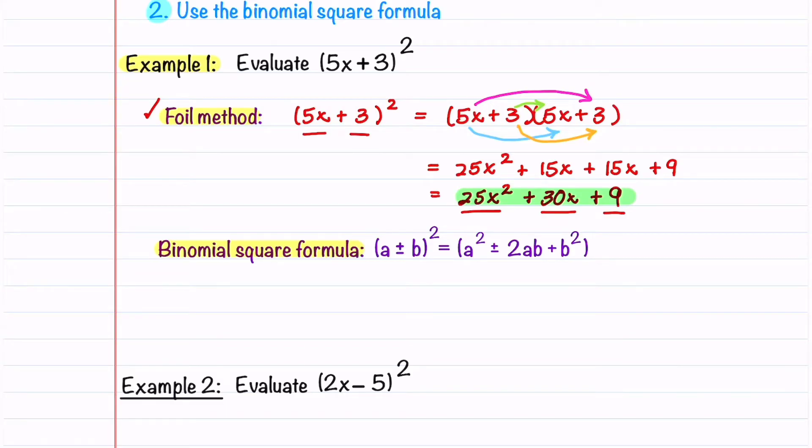This leads us to the binomial square formula: (a ± b)² = a² ± 2ab + b². This is equal to our first term squared plus or minus 2 times our first term and last term plus our last term squared.